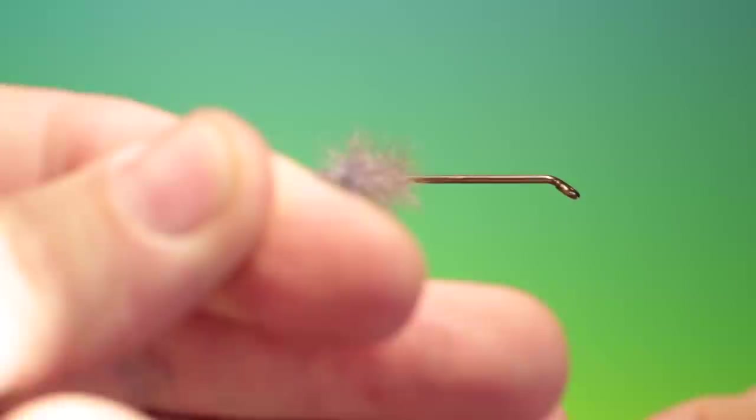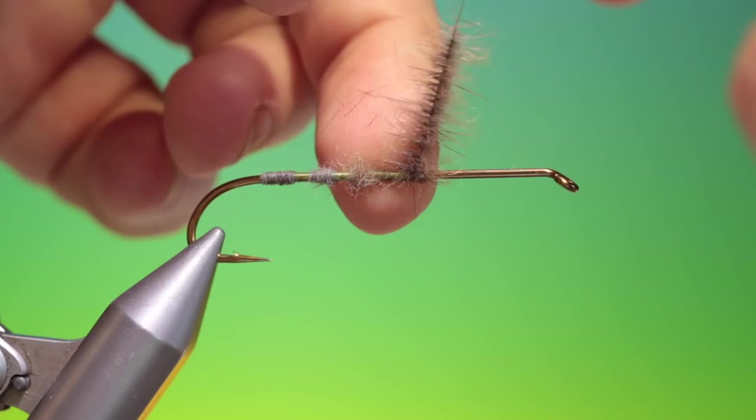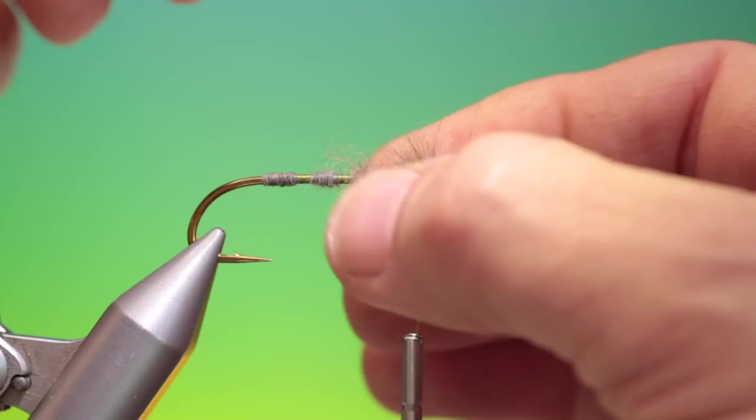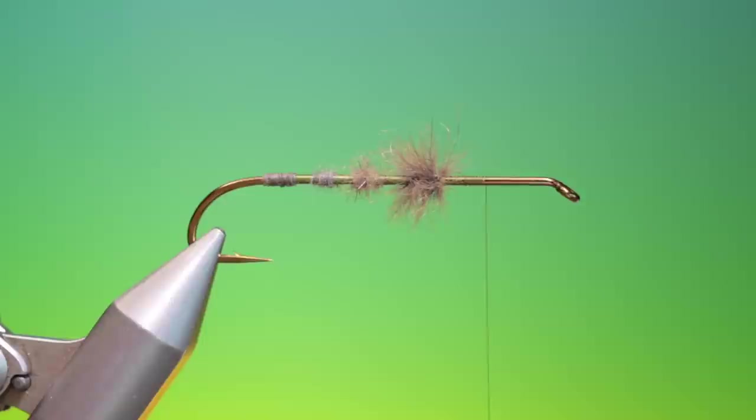And we just spin that up and this will give you a very nice even dubbing brush. So we'll just give that, want to really fold all that back with each turn. So that's an even buggier, scruffier look. So then we'll go forward and I'll show you a fur hackle.